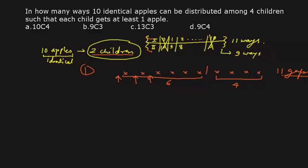For the version where each child must get at least one apple, the first gap (giving 0 to the first child) and the last gap (giving 0 to the second child) are ignored. That leaves only 9 valid gaps, so there are 9 ways of distributing 10 identical apples between two children with each getting at least one.